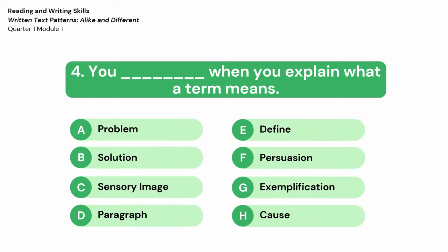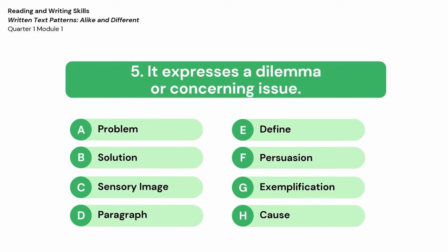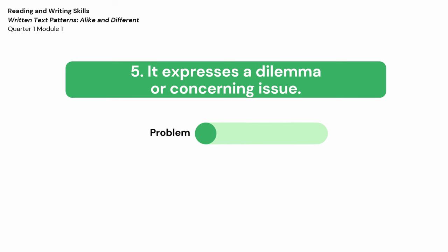Number 4: You blank when you explain what a term means. The correct answer is letter E, Define. Number 5: It expresses a dilemma or concerning issue. The correct answer is letter A, Problem.